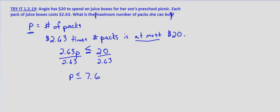Now she can't buy part of a pack. That's not indicated in the problem. So we have to round down to the next lowest whole number. So Angie can buy up to at most 7 packs.